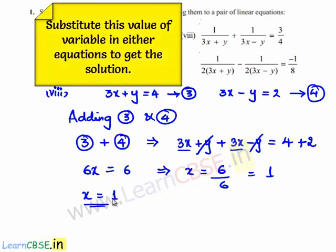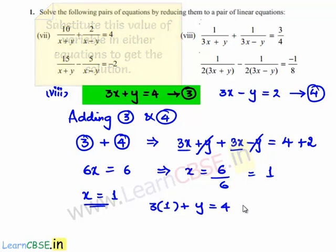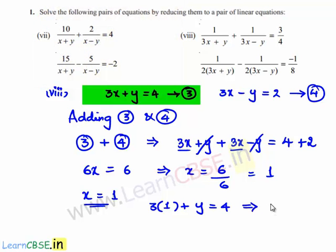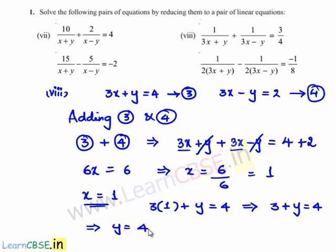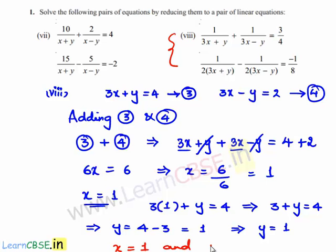Substituting x = 1 into equation 3: 3(1) + y = 4, so 3 + y = 4, giving y = 1. Hence the required solutions for the given set of linear equations are x = 1 and y = 1.